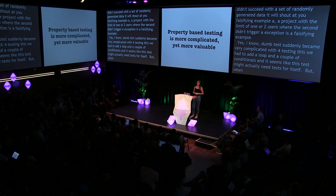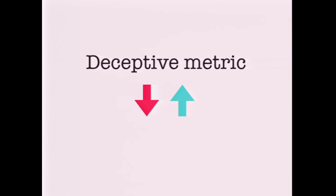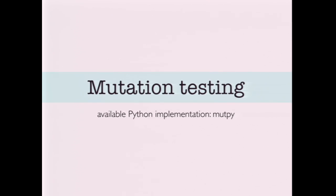Dumb tests suddenly became very complicated — we had to add a loop and conditionals, and this test might actually need tests for itself. But when used properly and timely, property-based testing can be a very valuable tool. Test code coverage is probably the most known and widely used metric. Django's test coverage is about 76%. Here's why I don't like code coverage: it's generally a very deceptive metric. Low code coverage means you probably need more tests. But high code coverage doesn't mean anything except that every single line of code was hit at least once. High code coverage simply doesn't imply high quality of tests. We can do better.